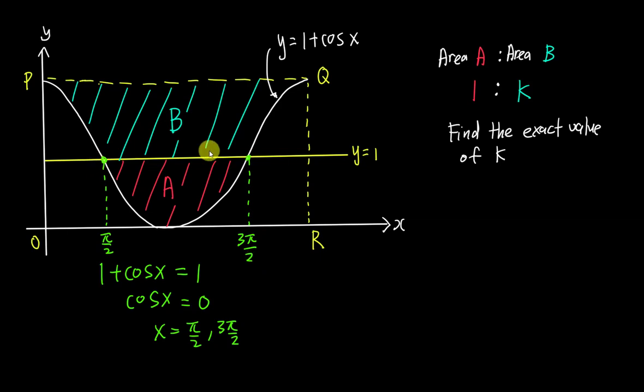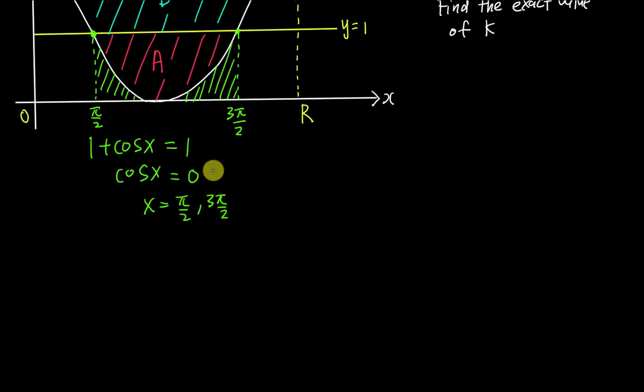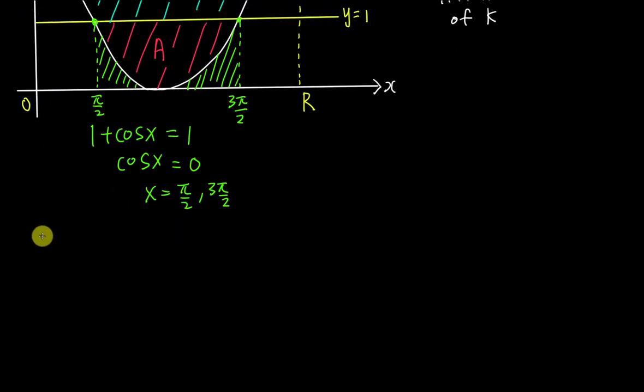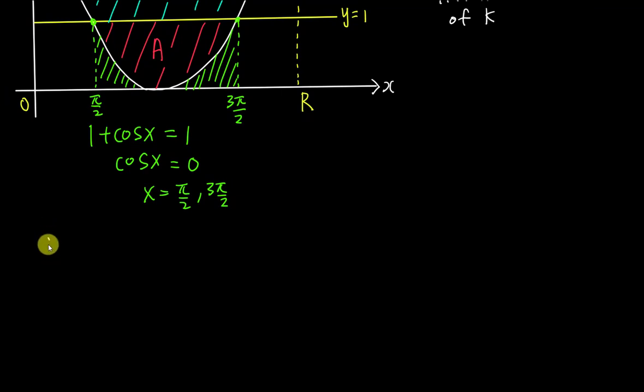Then you should be able to see a rectangle here. So if I use a rectangle and integrate the 1 plus cos x graph from π over 2 to 3π over 2, I'm actually getting this area. You can imagine if I use a rectangle minus this green color area, I should be able to get Area A.